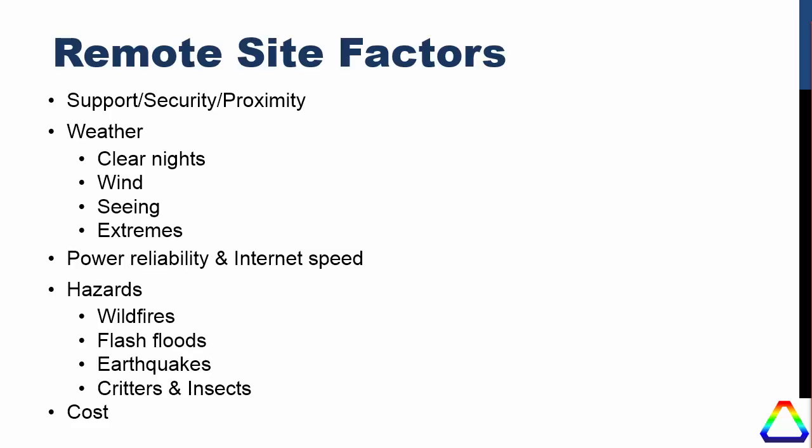Some of the factors to consider when looking at a remote site include support, security, and proximity. Support is important because even with a perfect remote site you can still have issues where you need someone to go and do something there — a farmer down the road, a friend, or someone who manages a farm of telescopes. Security is important when you're putting tens of thousands of dollars of equipment at a remote location. Proximity matters particularly if you don't have support — you don't want the site to be a two-hour drive away. Most people aim for a two to three hour drive as a compromise.